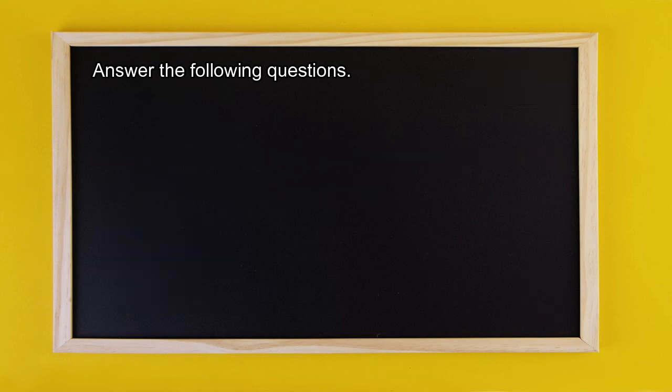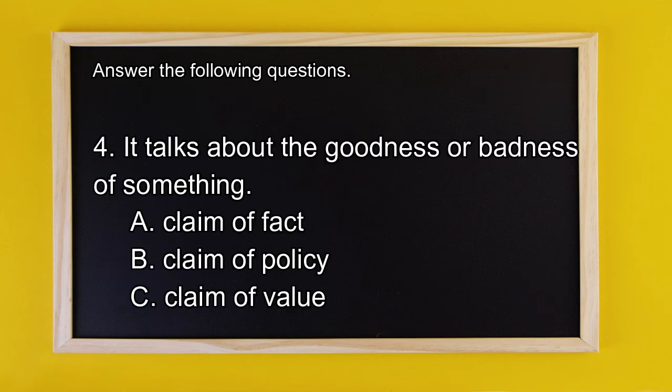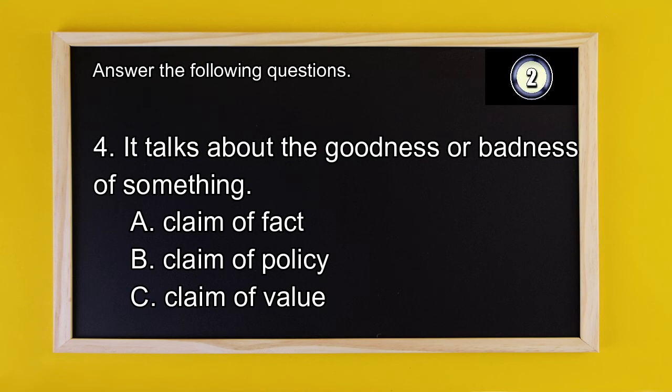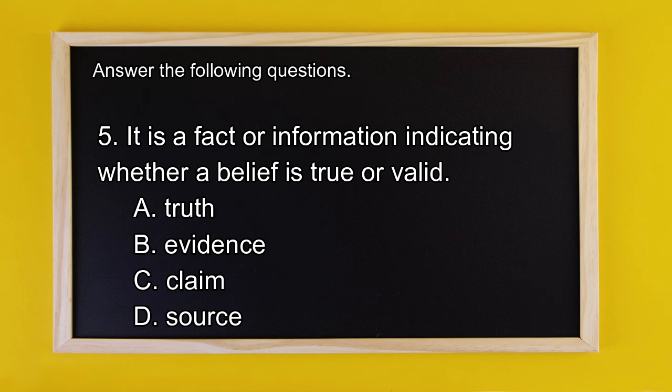Number 4: It talks about the goodness or badness of something. A. Claim of fact, B. Claim of policy, or C. Claim of value? And number 5: It is a fact or information indicating whether a belief is true or valid. A. Truth, B. Evidence, C. Claim, or D. Sorts?